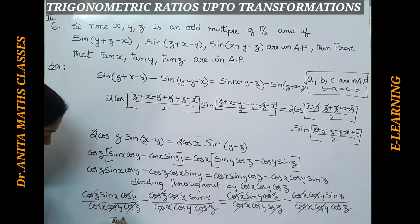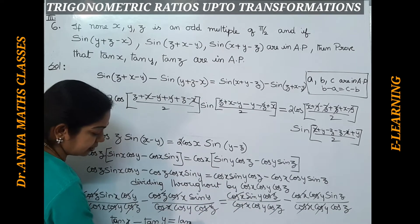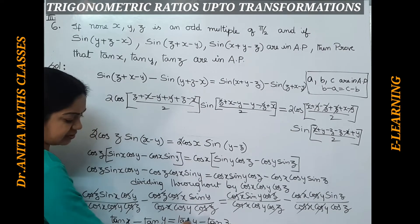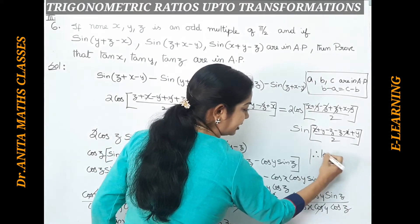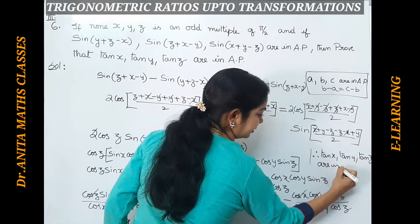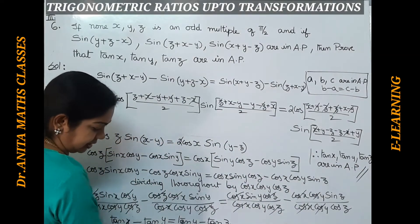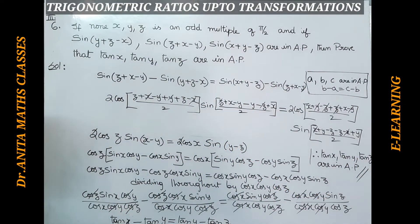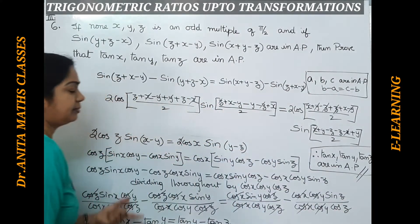So we arrive at tan x minus tan y equals tan y minus tan z. Therefore, tan x, tan y, tan z are in AP. If you take minus out from both sides, tan y minus tan x equals tan z minus tan y, confirming the common difference condition. So from this we can infer that tan x, tan y, tan z are in AP. Please pause and note it down.